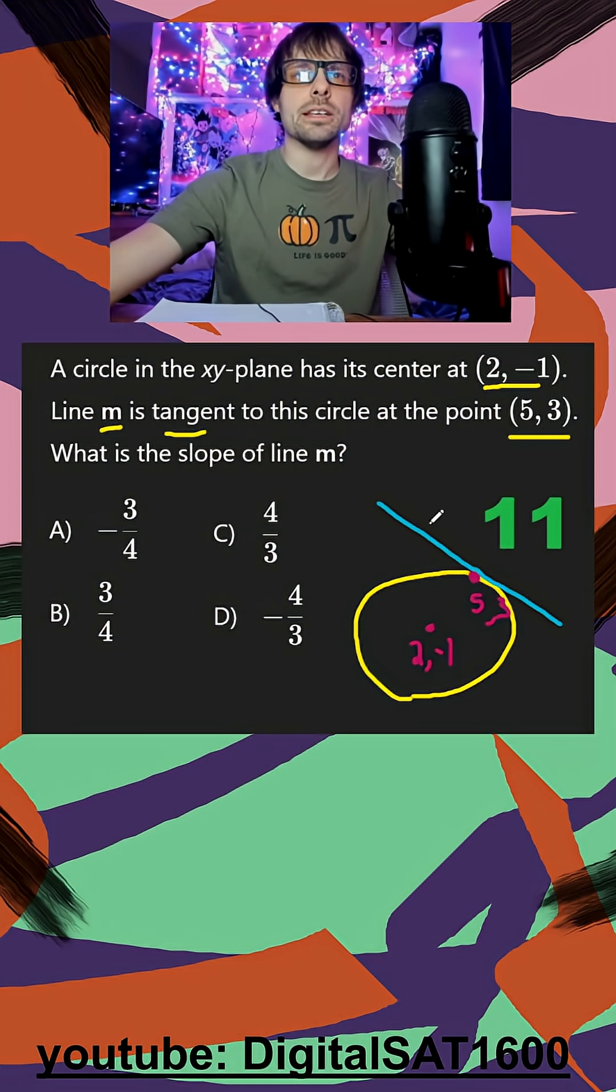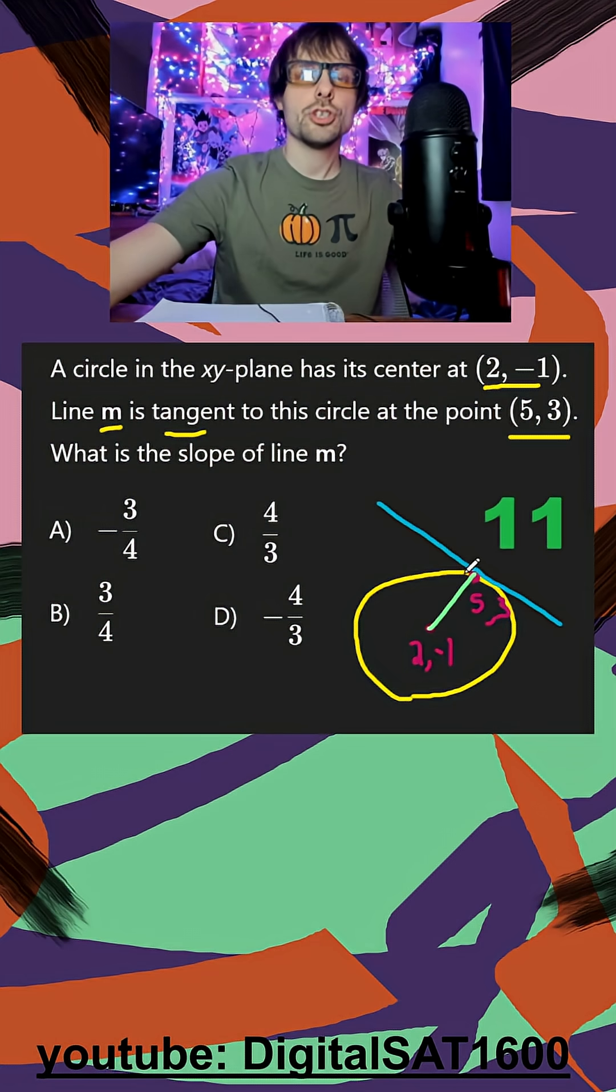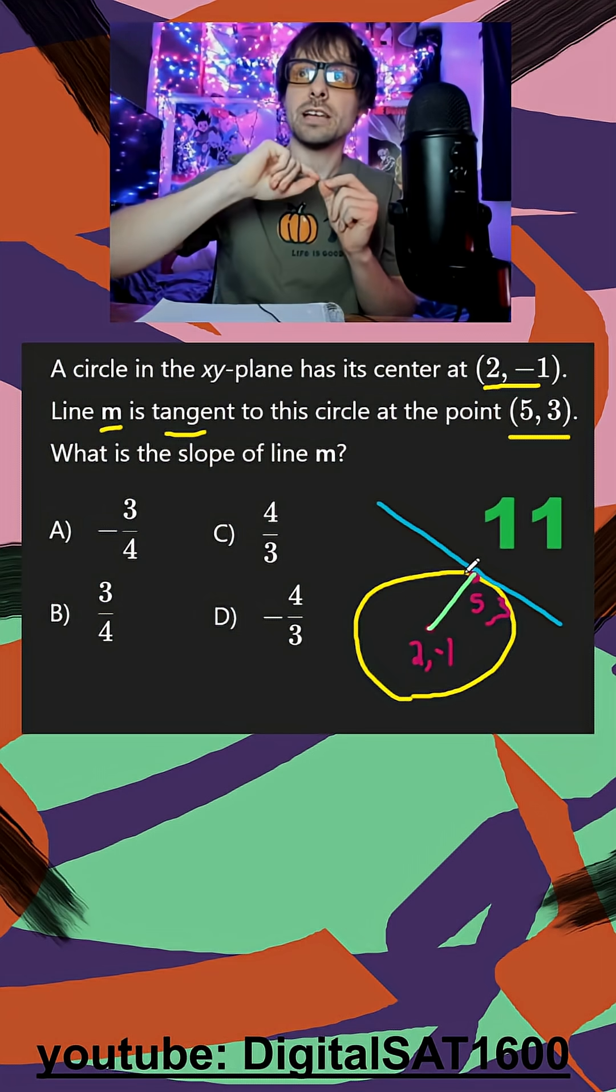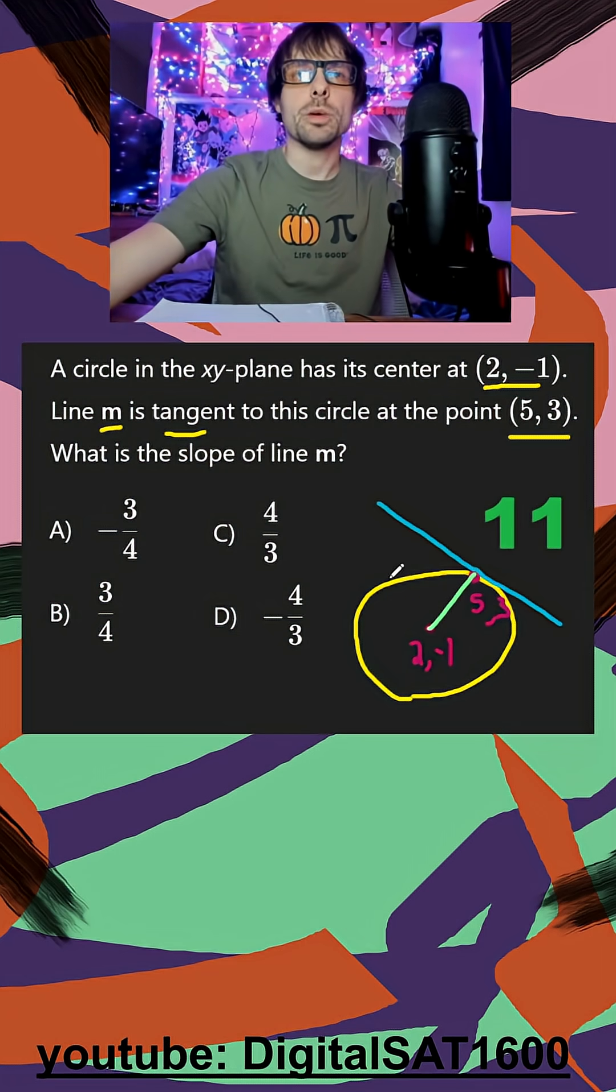And what's really useful here is what we know about tangent lines is it's perpendicular to if I draw a line from my center to that endpoint. So if I could get this line, specifically the slope of this line, I could just do the negative reciprocal to get the slope of my tangent line.